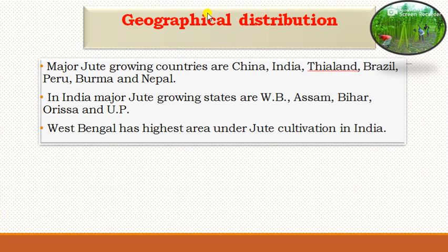Regarding geographical distribution, the major jute growing countries are China, India, Thailand, Brazil, Peru, Burma, and Nepal. In India, the major jute growing states are West Bengal, Assam, Bihar, Orissa, and Uttar Pradesh. West Bengal has the highest area under jute cultivation among all states.